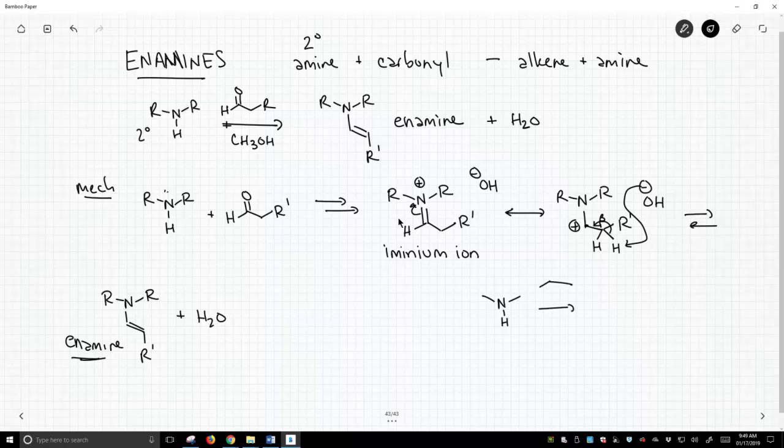We might take this really simple secondary amine called dimethylamine and react with cyclohexanone. We'll do this in methanol. Again, not in water. And if we go through the mechanism, we will form an enamine like this. The alkene happens to be within a ring. It's okay. It's nothing special. But we make this cyclic enamine.